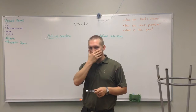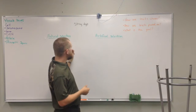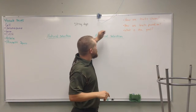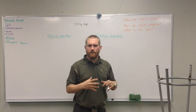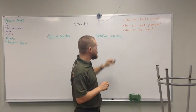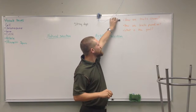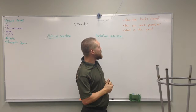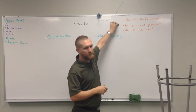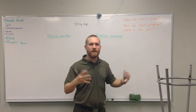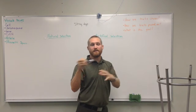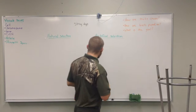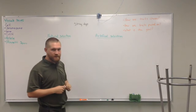I'm going to review some things we talked about in class about the difference between natural selection and artificial selection. There are three things I'm going to try to answer: how traits are chosen, how traits are passed on, and what the goal of each is. Genetics has to do with heredity and how traits are passed on.